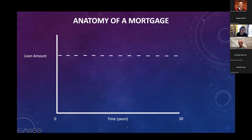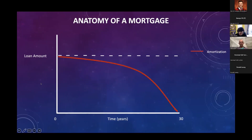On the x-axis, we've got years, and you can take up to 30 years to essentially pay down a mortgage. This red line here is the amortization line. Amortization simply means that you are paying off your mortgage — paying off that loan amount over time. It starts at the white dotted line and eventually goes down to zero over a few decades.